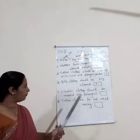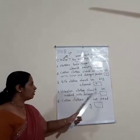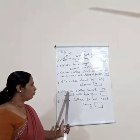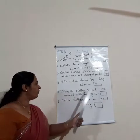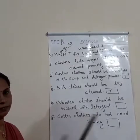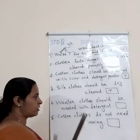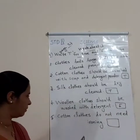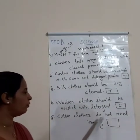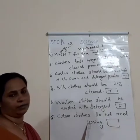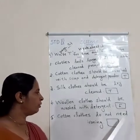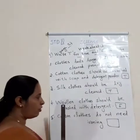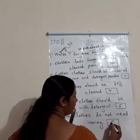Fourth statement: woolen clothes should be washed with detergent — this is a false statement, so write F. Fifth statement: cotton clothes do not need ironing — this is also a false statement, so write F.